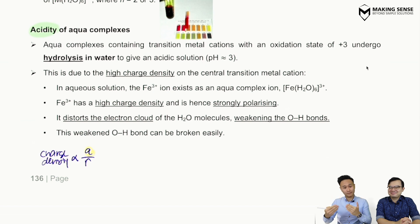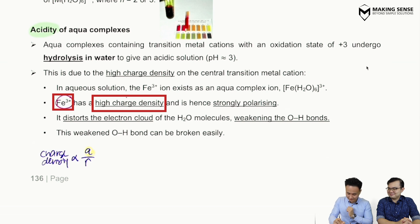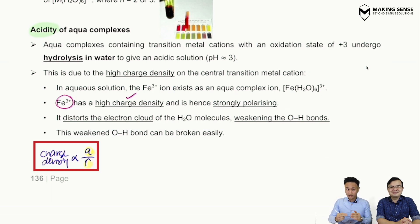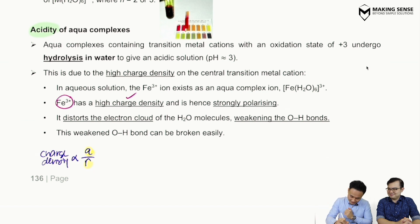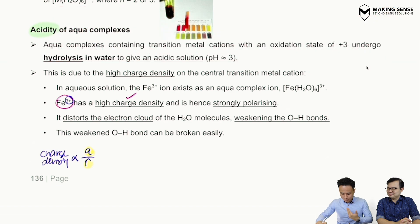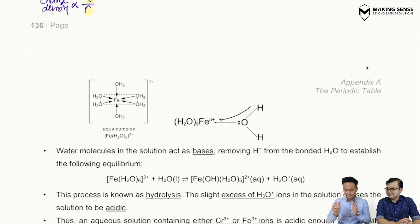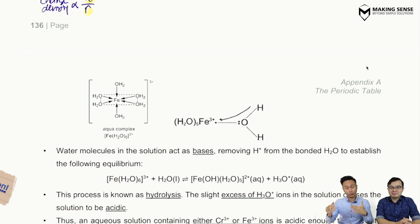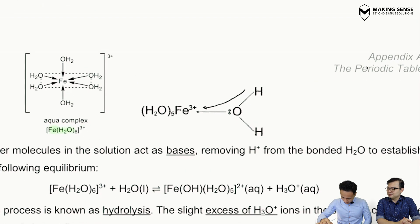For an aqua complex to be acidic, the first criterion is a transition metal ion with a high charge density. Charge density is proportional to q over r. For transition metal ions, when the charge is 3+ or above, this results in a high charge density. To understand why this leads to an acidic solution, note that the transition metal ion is surrounded by water molecules — for example, Fe3+ surrounded by six water molecules.